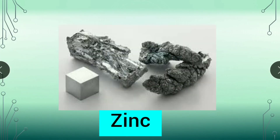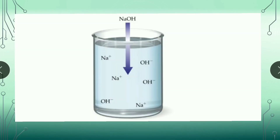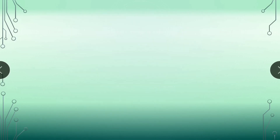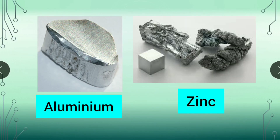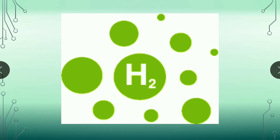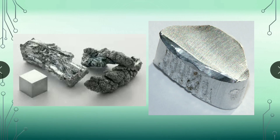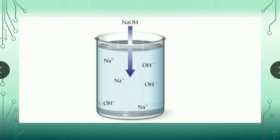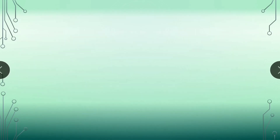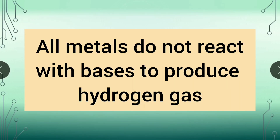Zinc metal also reacts with sodium hydroxide solution to form hydrogen gas. Thus, aluminium and zinc are the two common metals which react with bases like sodium hydroxide to produce hydrogen gas. In general, we can say that some metals react with sodium hydroxide to produce hydrogen gas. One thing we should remember here is that all metals do not react with bases to produce hydrogen gas.